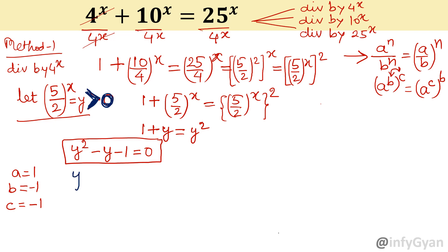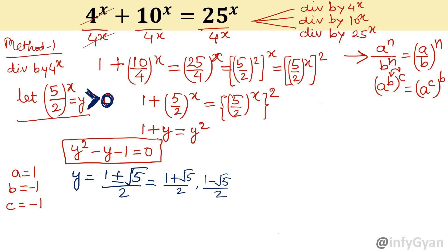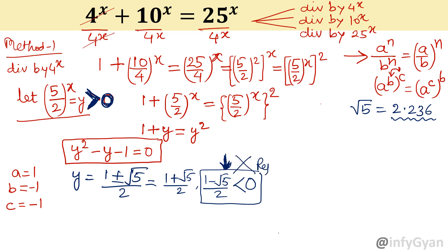So let me find out the value first. y equals minus b, so 1, plus or minus square root of b squared minus 4ac — that gives root 5 over 2. So two roots: (1 plus root 5) over 2, and (1 minus root 5) over 2. If you check the value of root 5 — it is 2.236 — putting that in the second root gives a negative value. So this solution cannot be acceptable. Rejected.